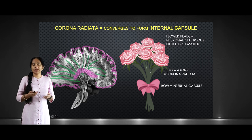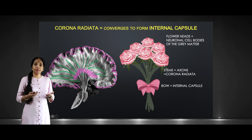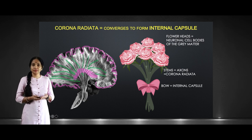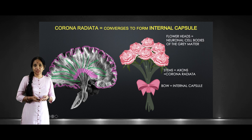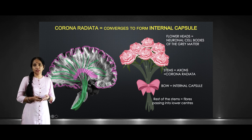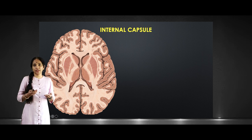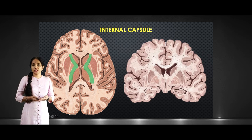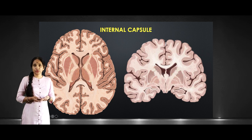A stroke of maybe one centimeter in the internal capsule can cause bigger damage compared to a one centimeter stroke in the cortical region. The rest of the flower stems represent the fibers passing down into the lower centers of the central nervous system. The internal capsule in a transverse section of the brain looks like a V-shape, and in a coronal section this is where you can locate it.